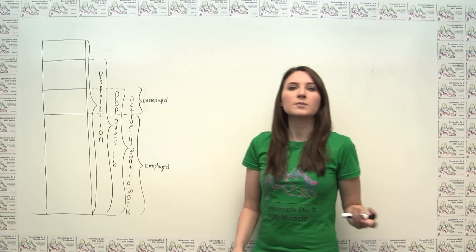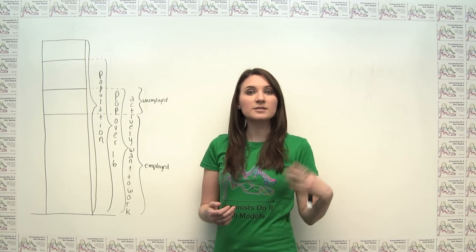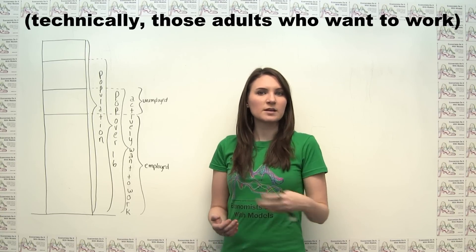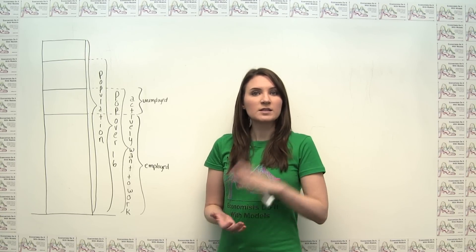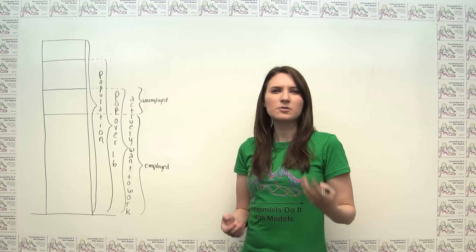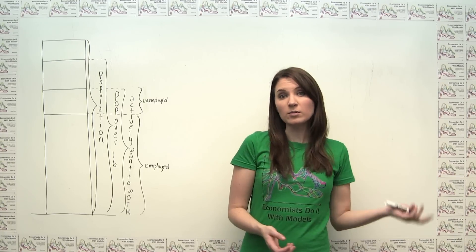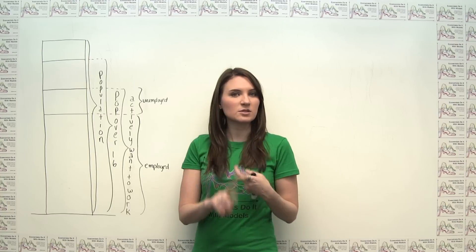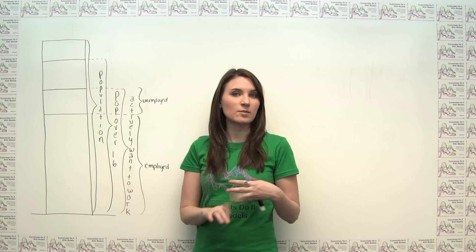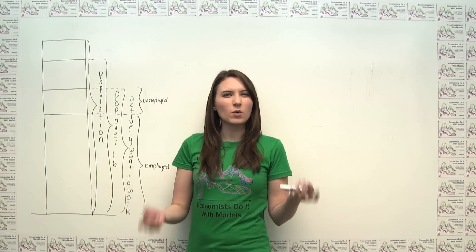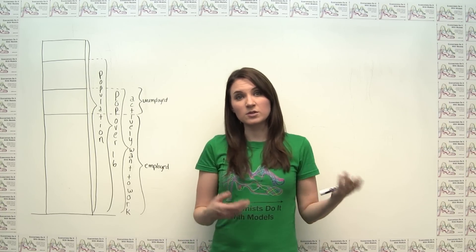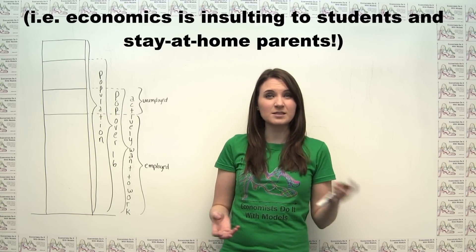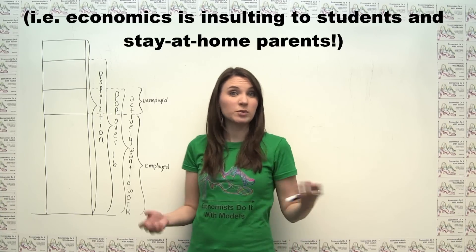The labor force in an economy consists of those people who actively want to work. The labor force is not equal to the population, however, since there are usually people in a society who either don't want to work or who are unable to work. Examples of these groups include full-time students, stay-at-home parents, the disabled, and so on. Note that work in an economic sense strictly refers to work outside of the home or school, since in a general sense students and stay-at-home parents actually do plenty of work.